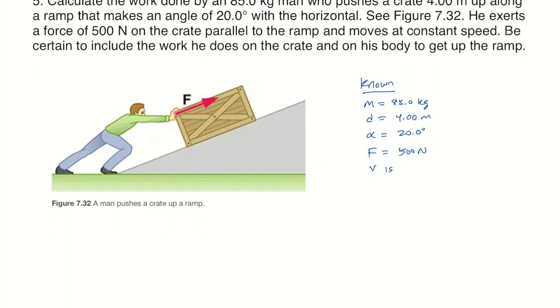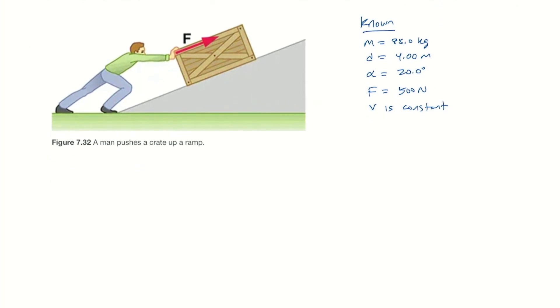The work done on the crate, W sub C, is the magnitude of the force applied to it times the magnitude of the displacement times the cosine of the angle between the force and displacement vectors.